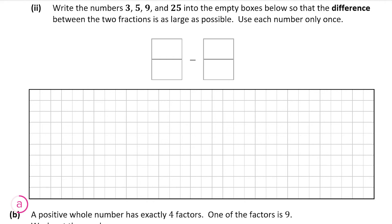Part 2 gives us four numbers — 3, 5, 9 and 25 — and asks us to place them to maximise the difference between two fractions. Fractions are just numbers, so we want to take the smallest number away from the biggest. The biggest fraction first, then minus the smallest possible number. For the first fraction, the biggest number over the smallest number gives the largest fraction.